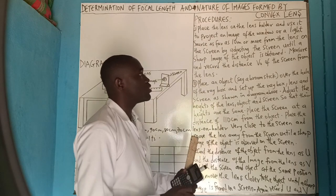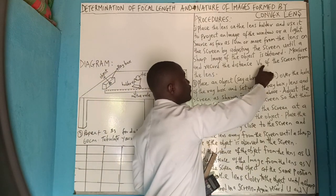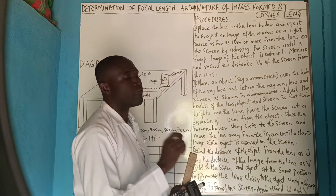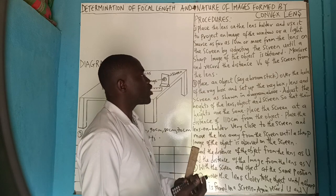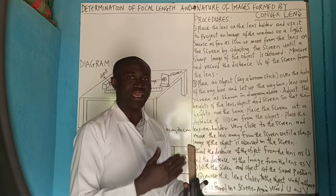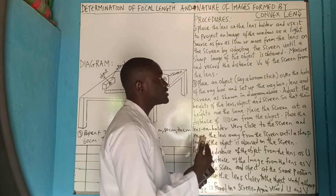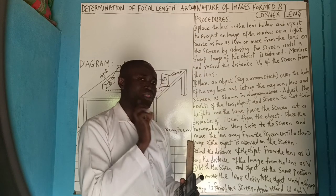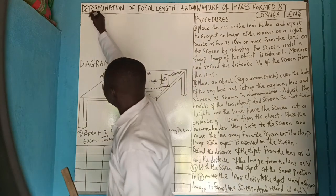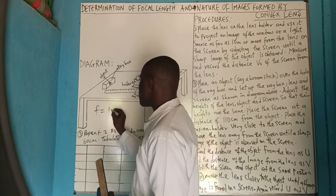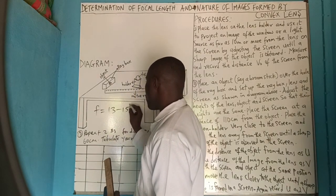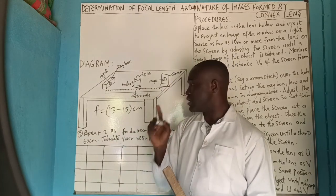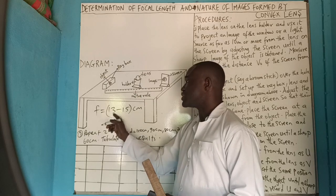The essence of the first procedure is to get our VO, which will be called the focal length of the converging lens. Because the focal length of a converging lens has a range, we won't perform that step manually. The range of focal length for a converging lens is 13 to 15 cm — that is, ranging between 13 to 15 cm.